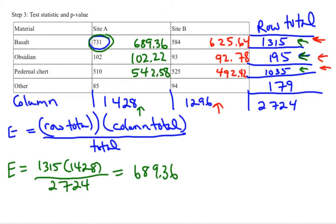And then the last row we have an 85. 85 is in the row of 179, and the column of 1,428. Again, multiply those two numbers together, divide by the grand total, and you end up with 93.84. And then the last one is in the row of 179, and the column of 1,296. Multiply those two numbers together, divide by your grand total, and you end up with 85.16.